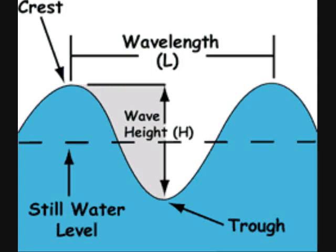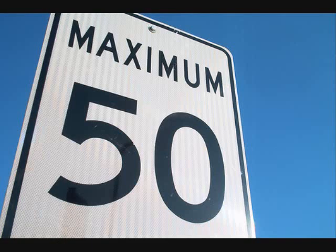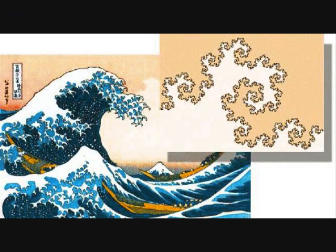All waves have a measurable wave height — the vertical distance from its crest, the high point, to its trough, the low point. The maximum height of a wave in feet is usually one-half or less the wind speed. Wave height decreases gradually as the wind dies.